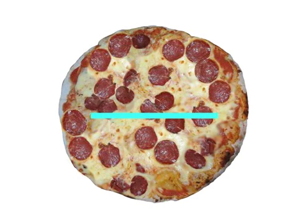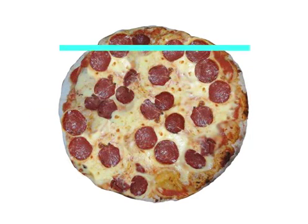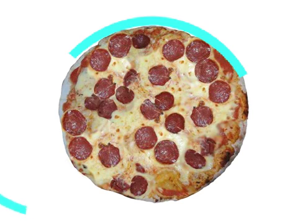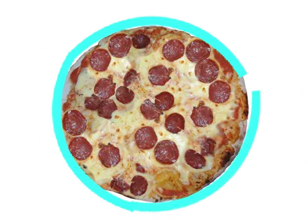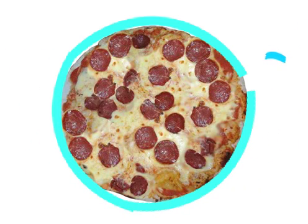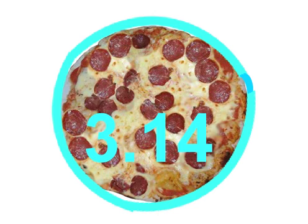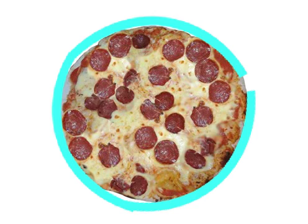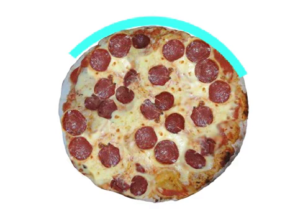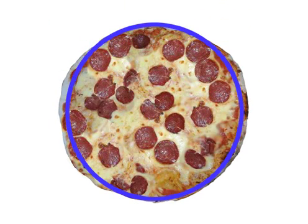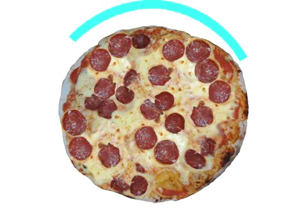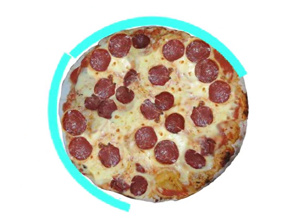If we measure the length of the diameter and compare it to the outer edge of the circle, we see that it goes around three times with a little left over. We abbreviate this as 3.14, and we call it pi. So the circumference, or outer measurement, of every circle will always be a little more than three times the diameter.